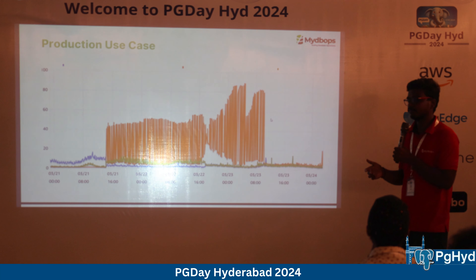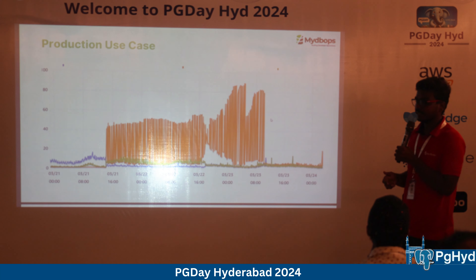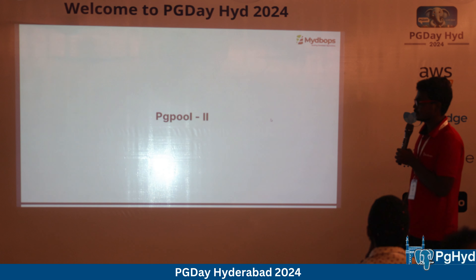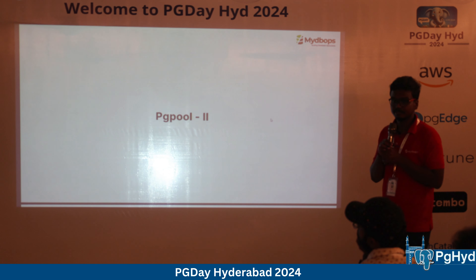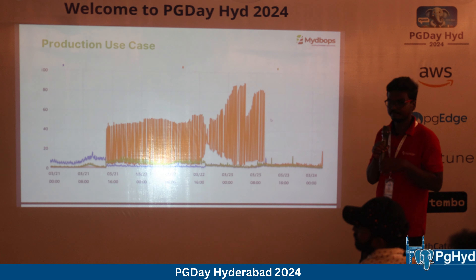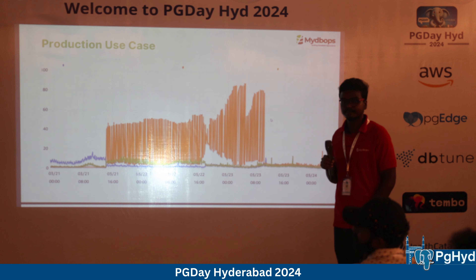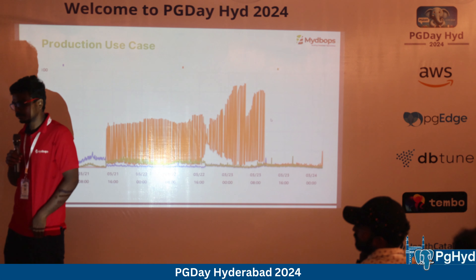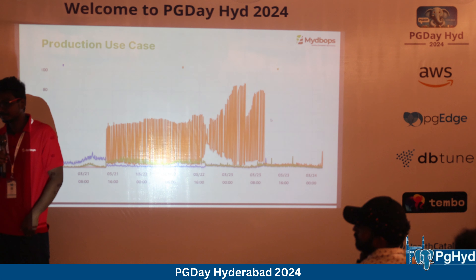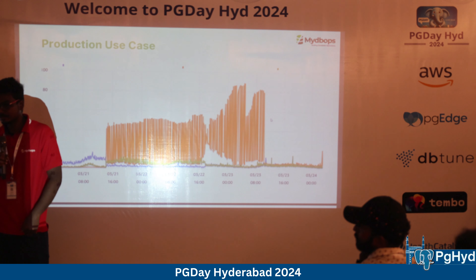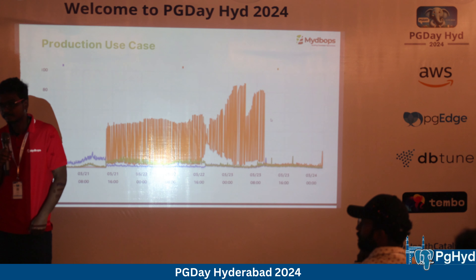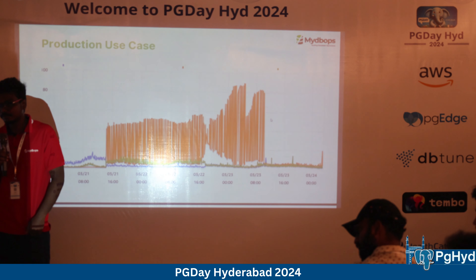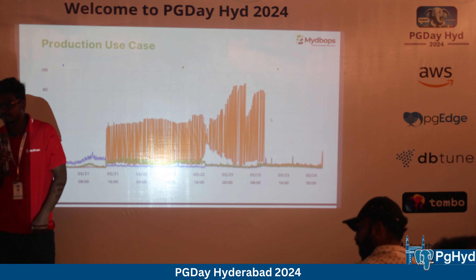This created a continuous cycle: the cron killed ~4K connections per minute and the application pooler recreated ~4K connections per minute, causing constant connection creation and destruction. This is visible in the graph as repeated up-and-down spikes instead of a flat line. Every connection creation caused a CPU spike, and every destruction caused a drop — this was the root cause of the high CPU usage.